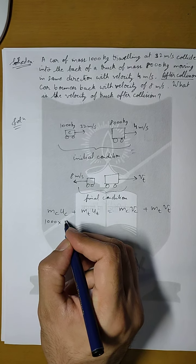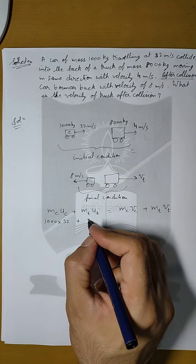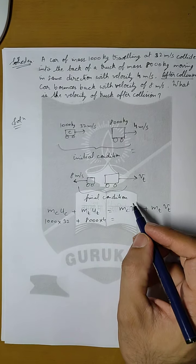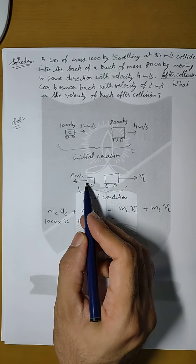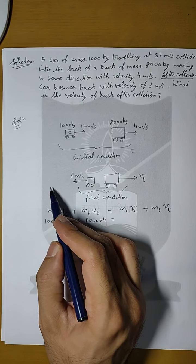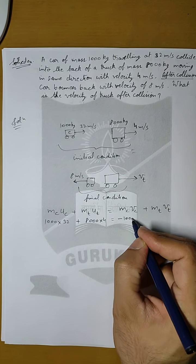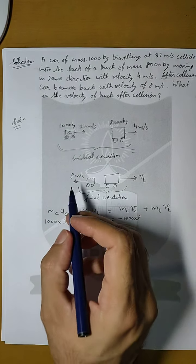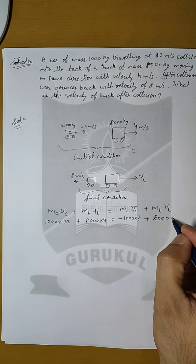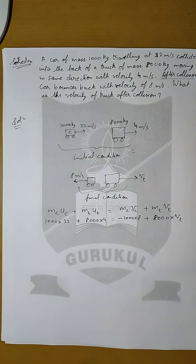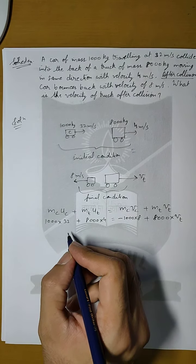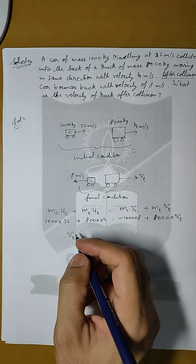Now we substitute the values. Mass of car is 1000 kg into initial velocity 32 meters per second, plus 8000 kg into 4 meters per second. The car has bounced back, so its velocity is in the negative direction. If this is the positive direction, this is the negative direction. So we apply minus 1000 into 8 meters per second, plus 8000 into Vt.